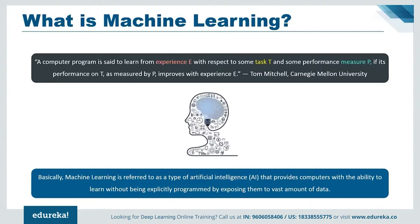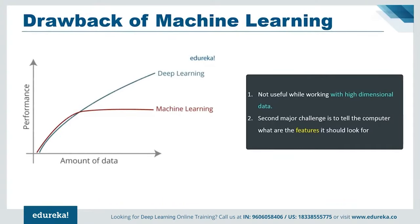Even though machine learning had great advancements, there were some drawbacks. Traditional machine learning algorithms are not useful while working with high-dimensional data — that is, where we have a large number of inputs and outputs. For example, in the case of handwriting recognition, we have a large amount of input associated with different types of handwriting. Handling and processing such data becomes very complex and resource-exhaustive. This is termed the curse of dimensionality.